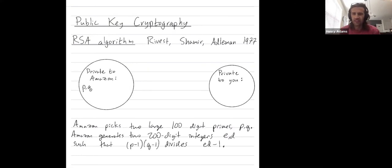I haven't and I won't explain how Amazon finds these two 200 digit numbers E and D, but it involves the Euclidean algorithm, which is closely related to greatest common divisors and generators of cyclic groups. So D is part of Amazon's private key.